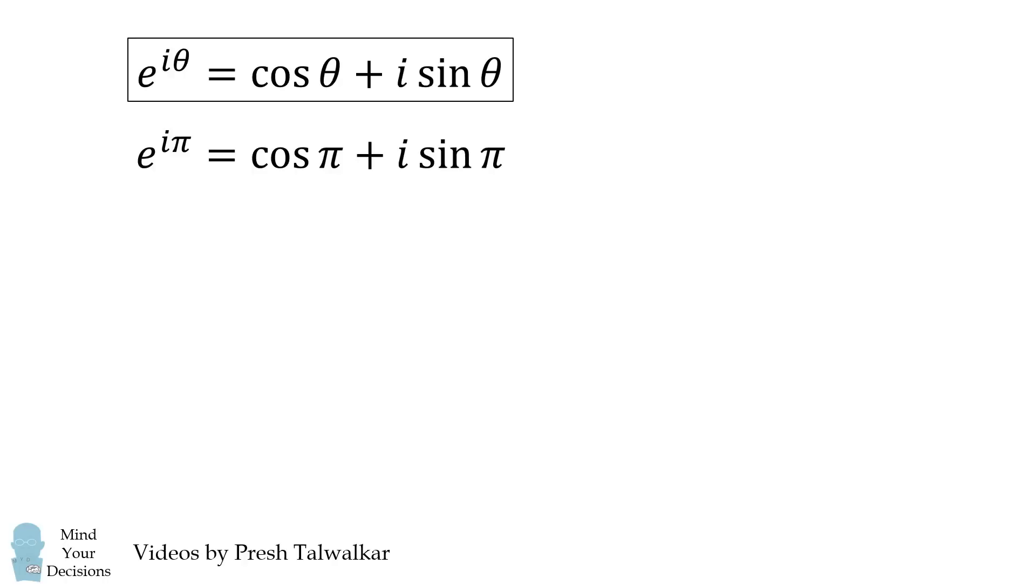Since the cosine of pi is equal to negative 1 and the sine of pi is equal to 0, this simplifies to be negative 1. And we get the famous identity that e to the i pi is equal to negative 1.